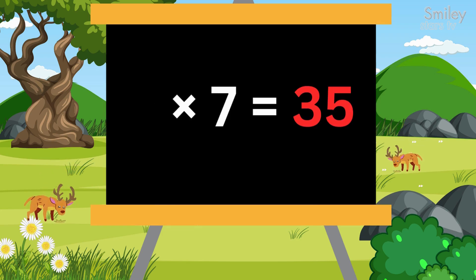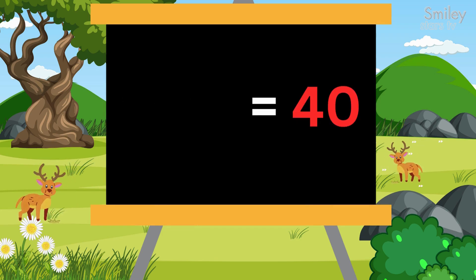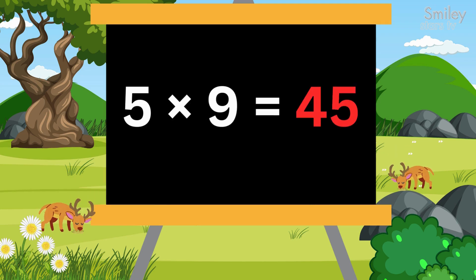Five sevens, thirty-five. Five eights, forty. Five nines are forty-five. Five tens, we know it's fifty.